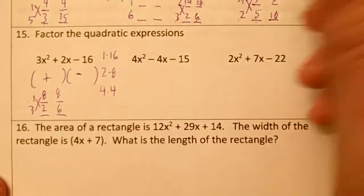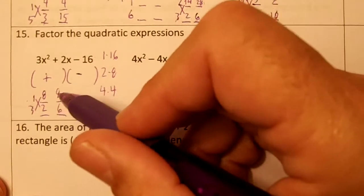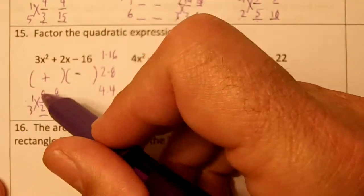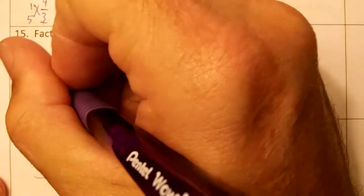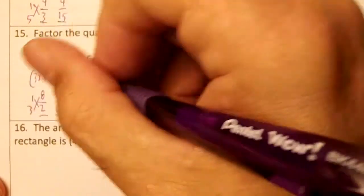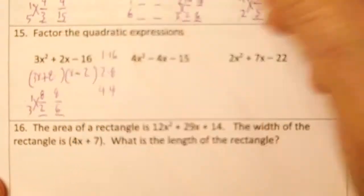3 times 2 is 6. Draw your x. Which one's larger? 8 or 6? The 8's larger, so the 3x and 8 go first. And the 1x and 2, or x and 2, go last.